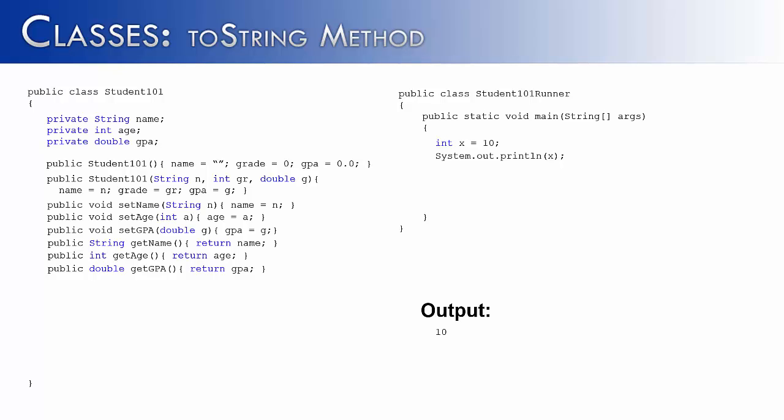Well I have two classes here, the student 101 class and the student 101 runner. What would happen if instead of printing out a primitive like x, what would happen if I printed out an object of the student 101 class? What if I wrote a statement like student 101 stu equals new student 101, creating an object of the class, and then I said system out print line stu just like I did with x. What would print out? It would print out something like this. Now if you were to run this program on your computer, it wouldn't look exactly like this, but it would look something like this.